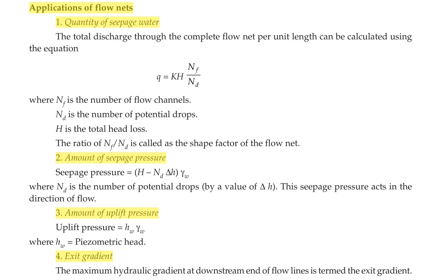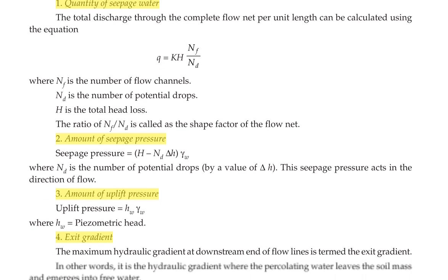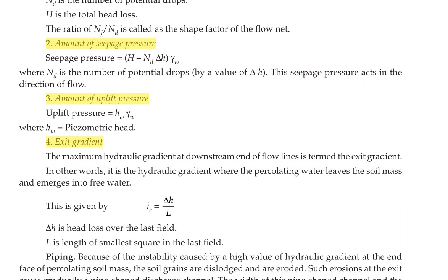Next we are going to see the exit gradient. Exit gradient is the maximum hydraulic gradient at the downstream end of flow lines. In other words, it is the hydraulic gradient where the percolating water leaves the soil mass and emerges into free water. The exit gradient is given by IE = ΔH / L, where ΔH is the head loss over the last field and L is the length of the smallest square in the last field.